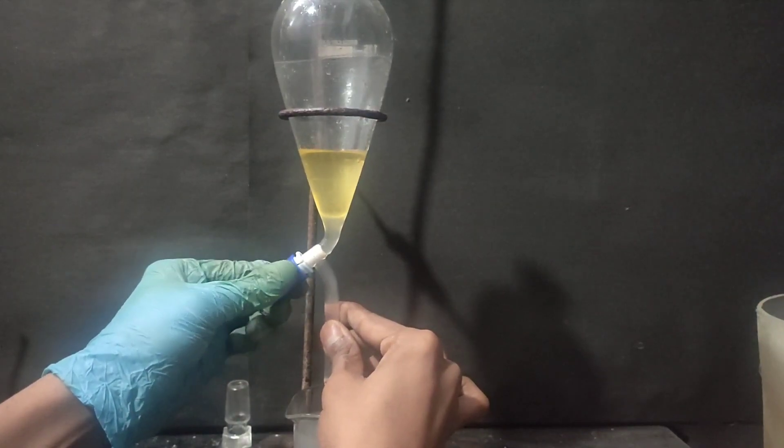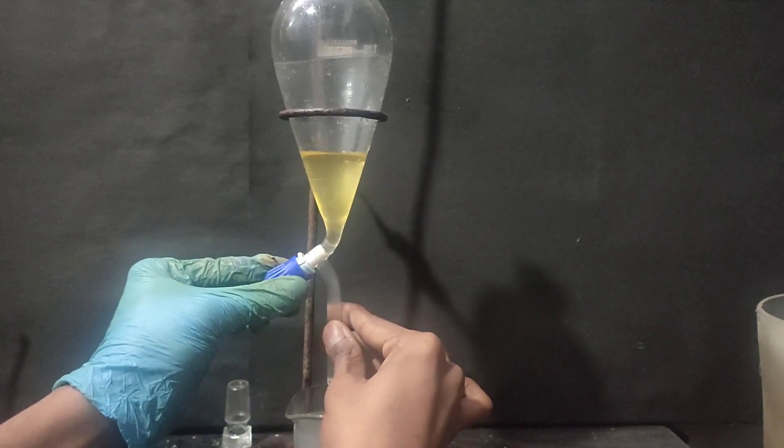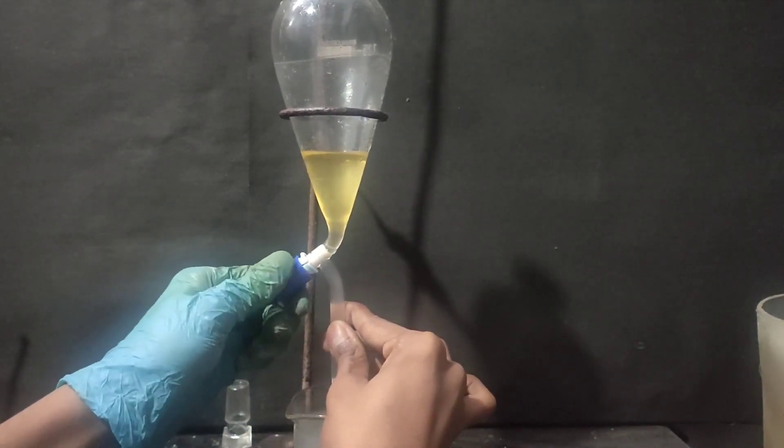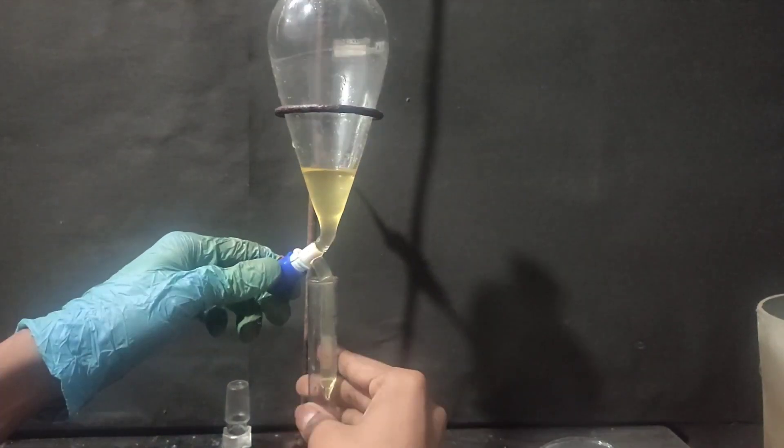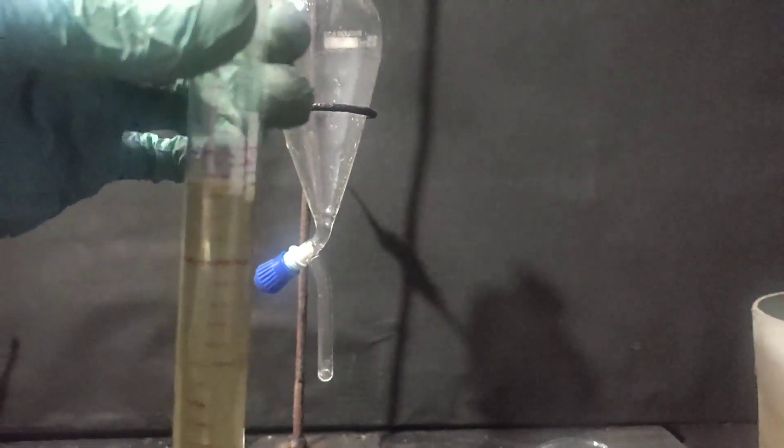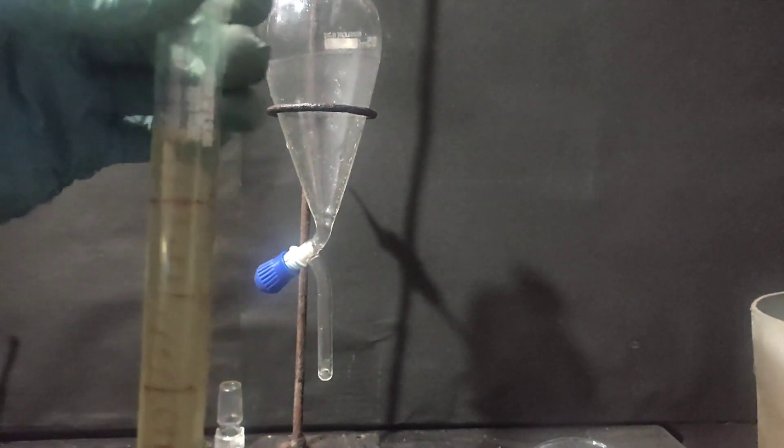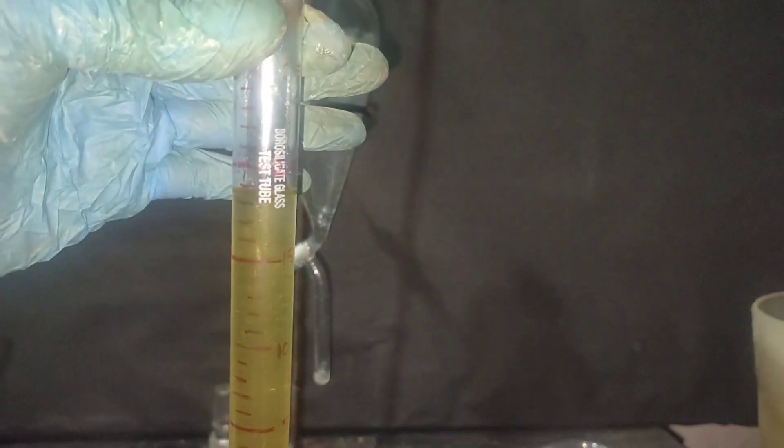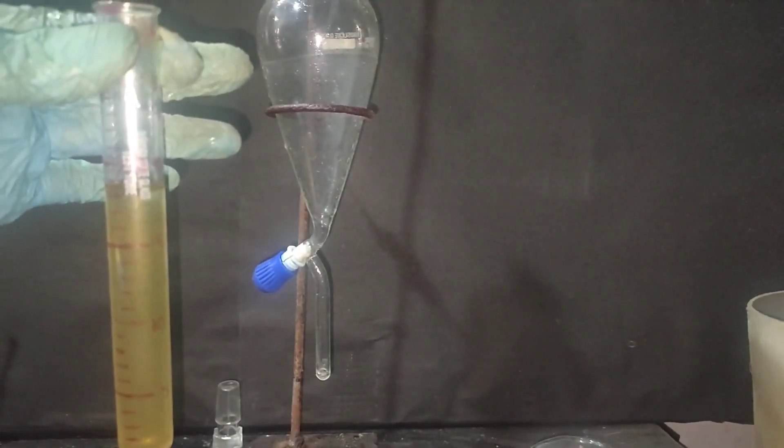And this time, the lower layer was the aqueous layer because on adding salt, density of water increases. The aqueous layer was drained off and discarded. Then the benzaldehyde was collected in a graduated test tube. And it was seen that around 1.5 ml of benzaldehyde was lost in the washing step. So now we are starting with 18.5 ml of benzaldehyde.